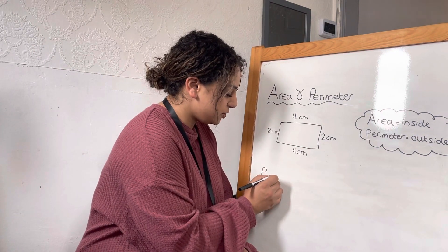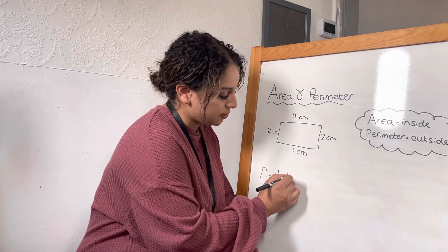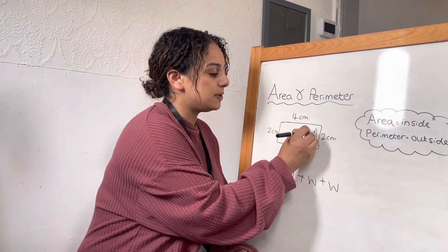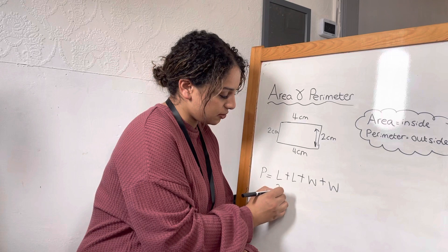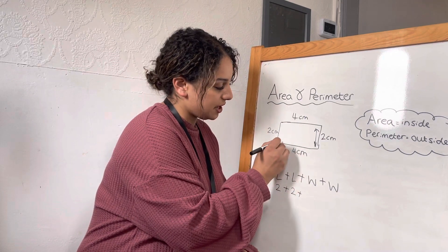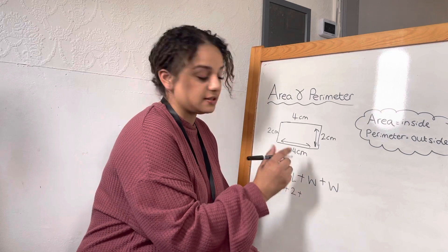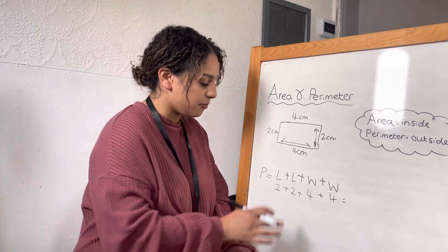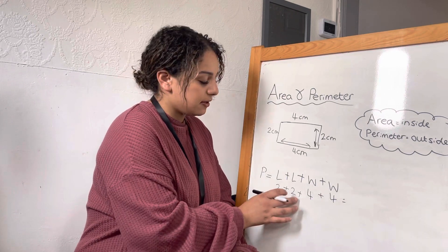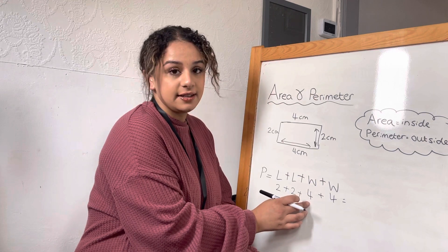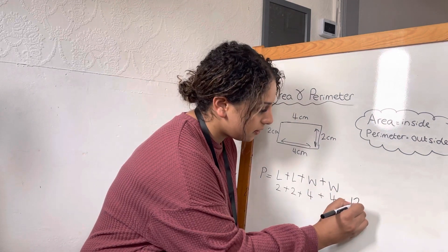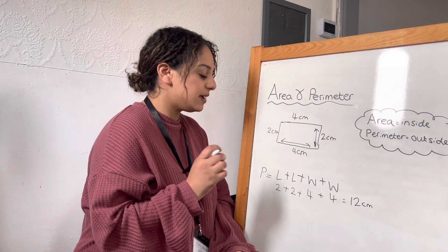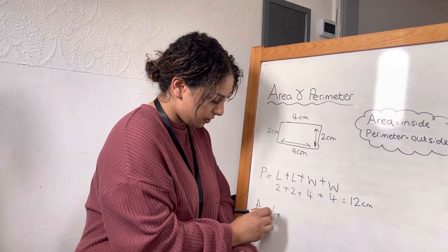We're going to start with the perimeter — the outer part — because it's a little bit easier. When you do perimeter, you add your length, add your length, add your width, add your width. The length is how long the shape is, so it's two centimeters, and the width is how wide it is, which is four centimeters. All you do is add everything up: two plus two is four, then four plus four is eight, plus another four is twelve. Don't forget your unit of measurement — that is centimeters.